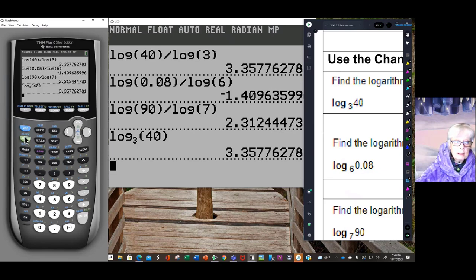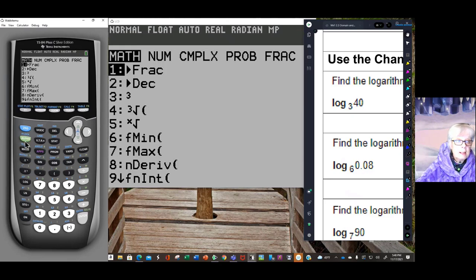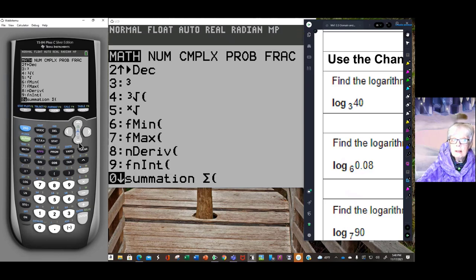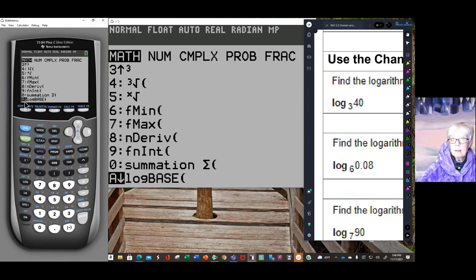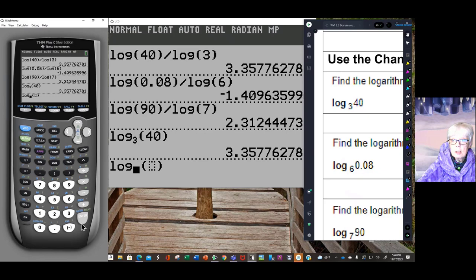So why the heck did I bring up the change of base formula? Because not every calculator has log base. What do you do if you find your calculator or whatever calculator you're using doesn't have log base? Then you better know the change of base formula. But if you want to use log base, here's how you get there again. You click on the math button. Math. That gives you this menu. Come all the way down past 9 to A. And that will give you log base. If you hit enter. And now let's do this. And that will be it for this video. Log base 6 of 0.08. Right arrow key. Enter.